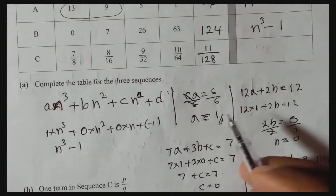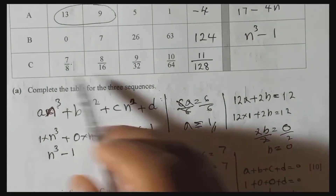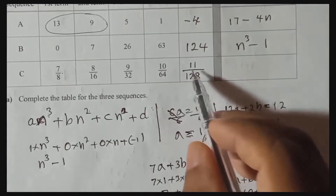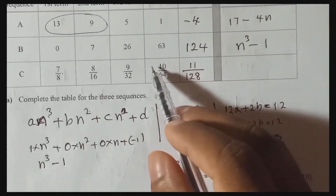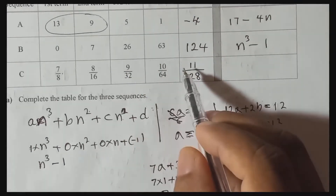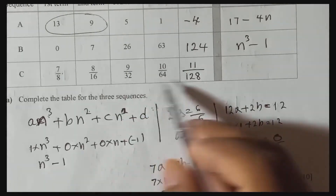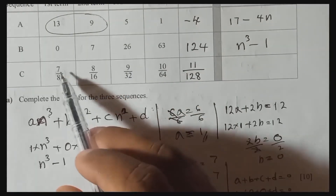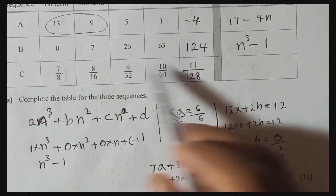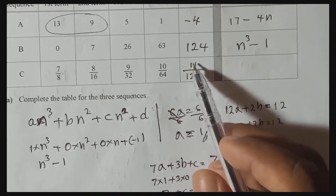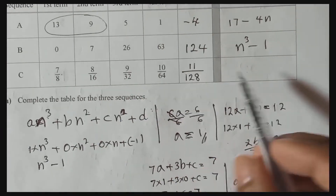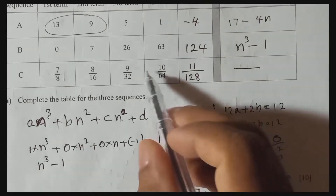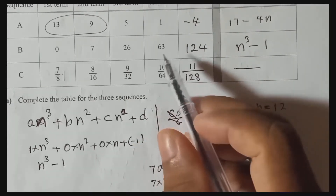Now, to find the nth term of sequence C, we need to find the numerator and denominator separately since they are different types of sequences. For the numerator — it's an arithmetic sequence, like we did earlier.